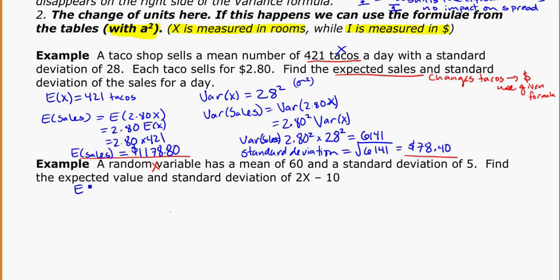So here I know that the expected value of x, its mean, is 60. And its standard deviation of x is equal to 5. So that tells me the variance of x will be equal to 5 squared, which is also 25.